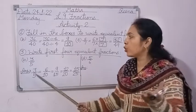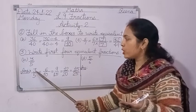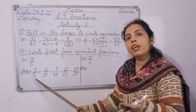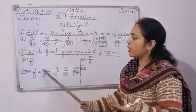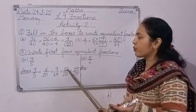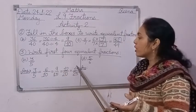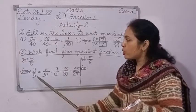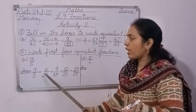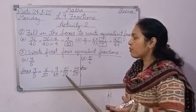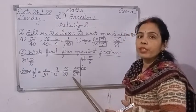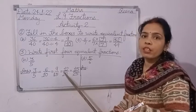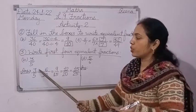The simple method: whatever number is in the numerator, use its table on top; whatever number is in the denominator, use its table below. Numerator table of 3: 3, 6, 9, 12, 15. Denominator table of 5: 5, 10, 15, 20, 25. These 4 fractions are equivalent to 3 upon 5.